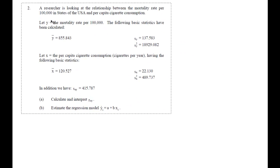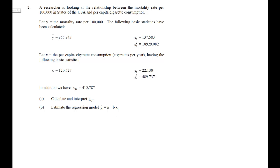That was the finish of question 1. Let's continue to question 2, which is quite a lot of repetition of what we've just done, but you can never repeat stuff enough. Again, we have a regression problem with two variables: the mortality rate and cigarette consumption. y is going to be the mortality rate per 100,000, and x is going to be the per capita cigarette consumption. We have a number of statistics: average values, variances, standard deviations, and a covariance.